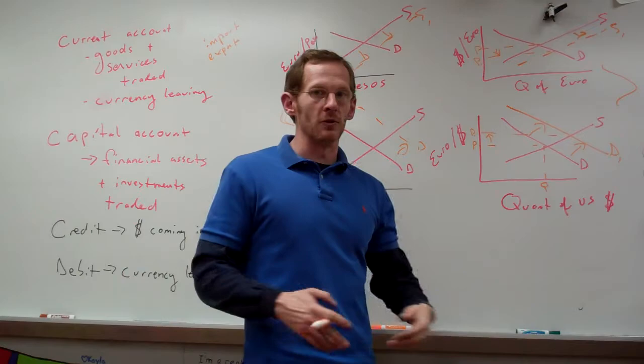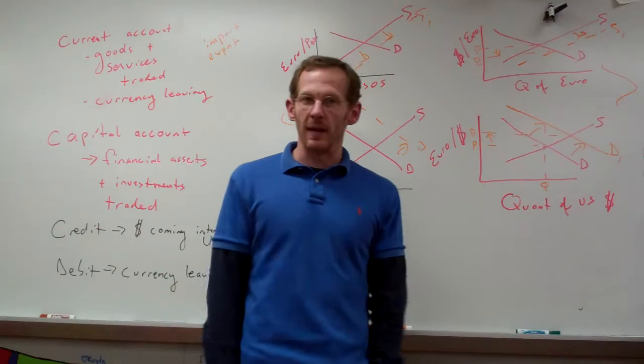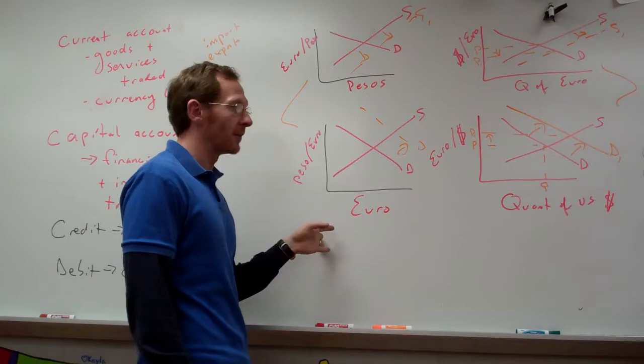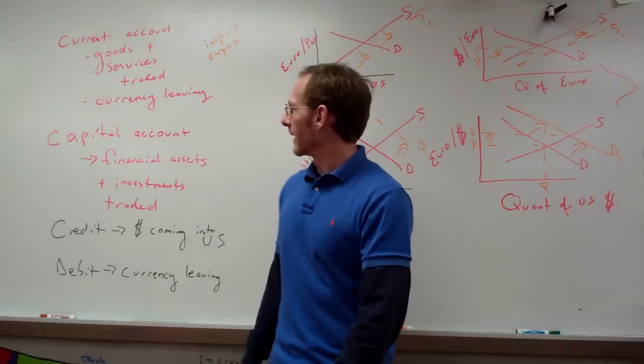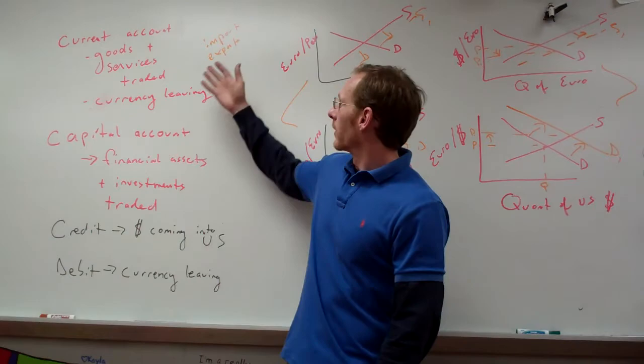To summarize both examples: the tourist scenario is a current account example — tourists demand US dollars, appreciating the dollar and increasing the supply of euros on the currency market. The interest rate scenario is a capital account example involving financial assets. Capital accounts are financial assets and investments traded among countries, while current accounts are goods and services traded among countries, plus currencies leaving the economy.